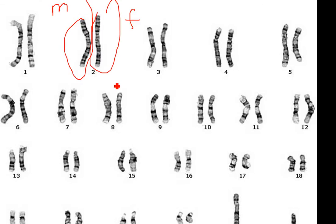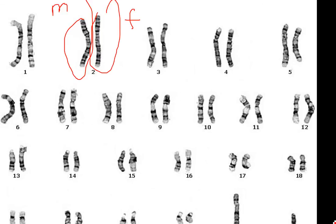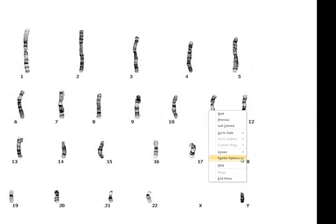Now let's look at haploid. Notice the difference: diploid has pairs, haploid has only one homologous chromosome — and that includes the sex chromosomes. Because this was a male, here's your Y. This person sent a Y, which means their child is going to be a son.